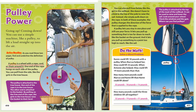Pulley power. You can use a simple machine, like a pulley, to lift a load straight up into the air. A pulley is a wheel with a rope, cord, or chain around it. One end of the rope hangs on each side of the pulley. You can pull from the side, like the girls in the treehouse. The pulley is attached to the treehouse. One end of the rope is in the treehouse; the other end is attached to the basket. By pulling on the free end of the rope, the girls in the treehouse raise the basket to their level.